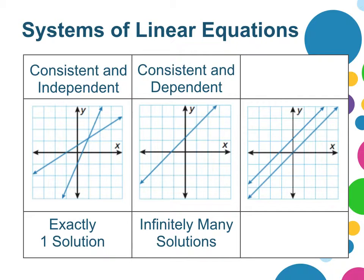So consistent means they definitely intersect, but independent versus dependent qualifies whether or not they're the same line. In the last example, the two lines are parallel. They will not intersect. We say that this system is inconsistent. There is no solution.